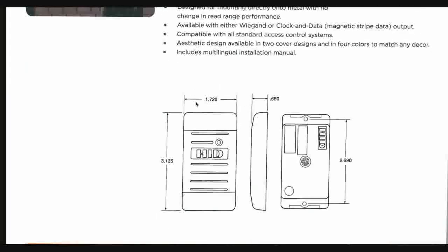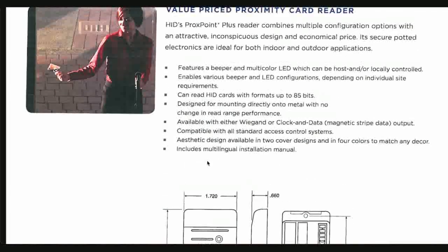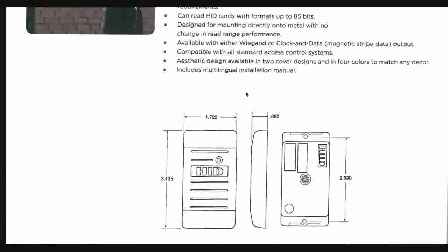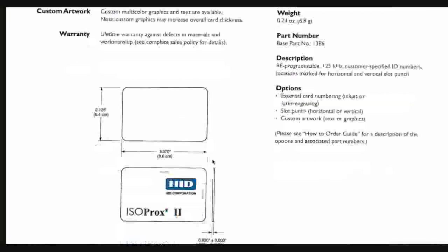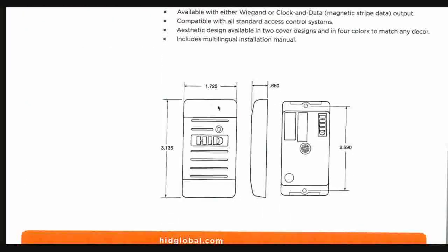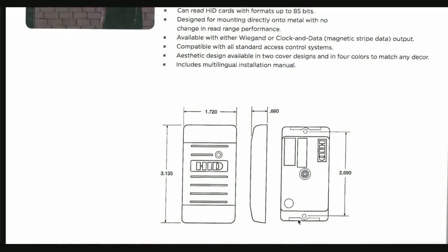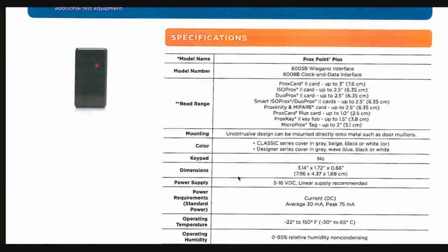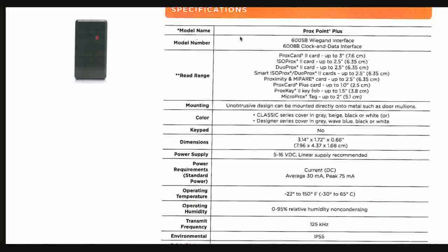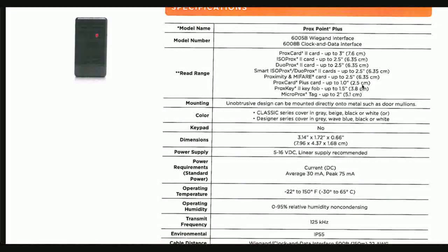We are reviewing this kind of reader for two things: to ensure that the reader will read the access cards we are choosing, and also to identify the mount type — the back box or frame in which the reader will be fixed. The datasheet shows the model name, model number, and read range, which varies for each card type.